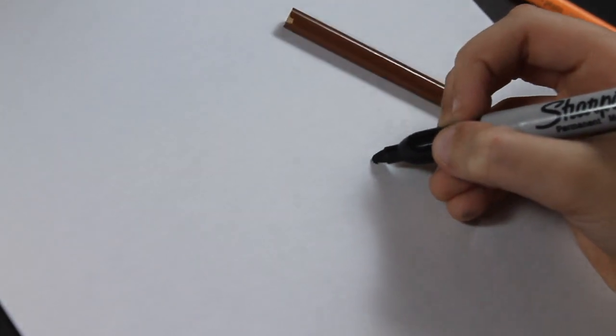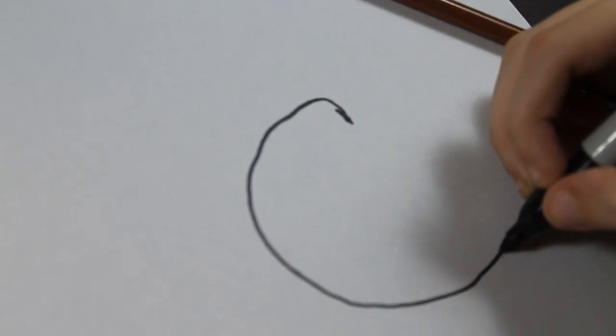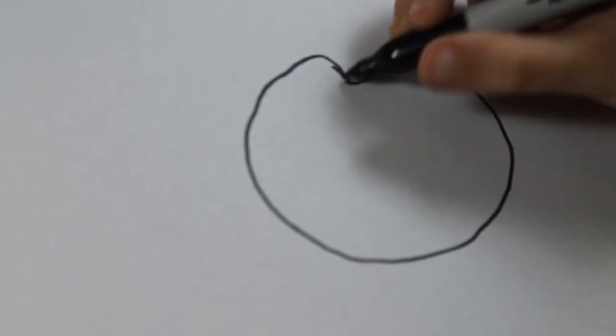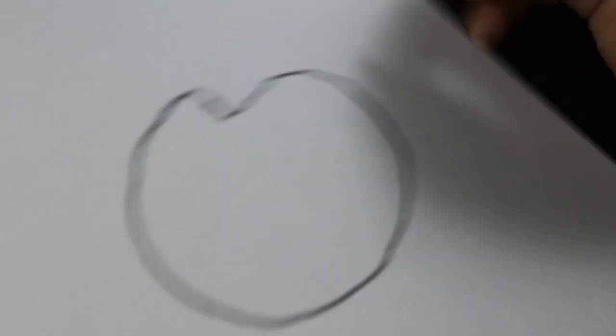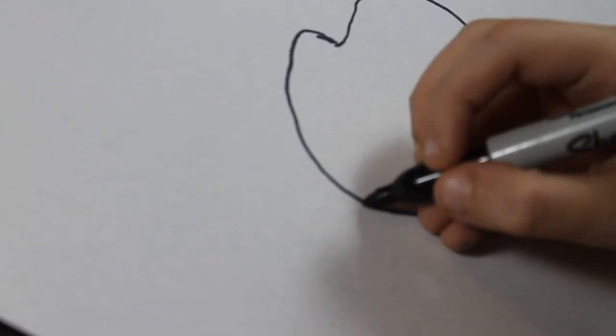So you're going to draw a big circle. Then you're going to make a ring like this.